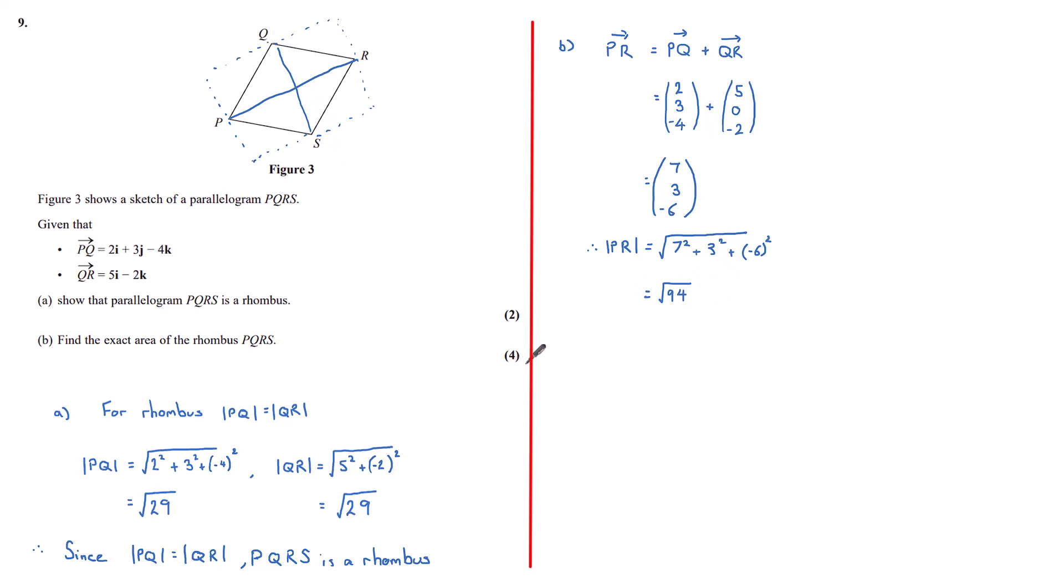Now we need to find the length QS. Well, QS is the same as going from Q to P and then P to S, but we already know PS to be the same as QR since it is a parallelogram.